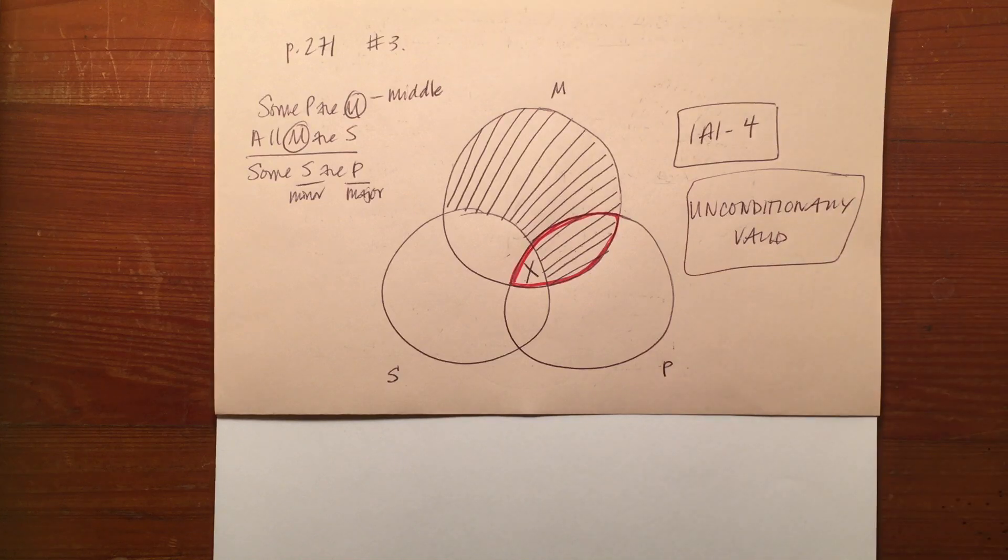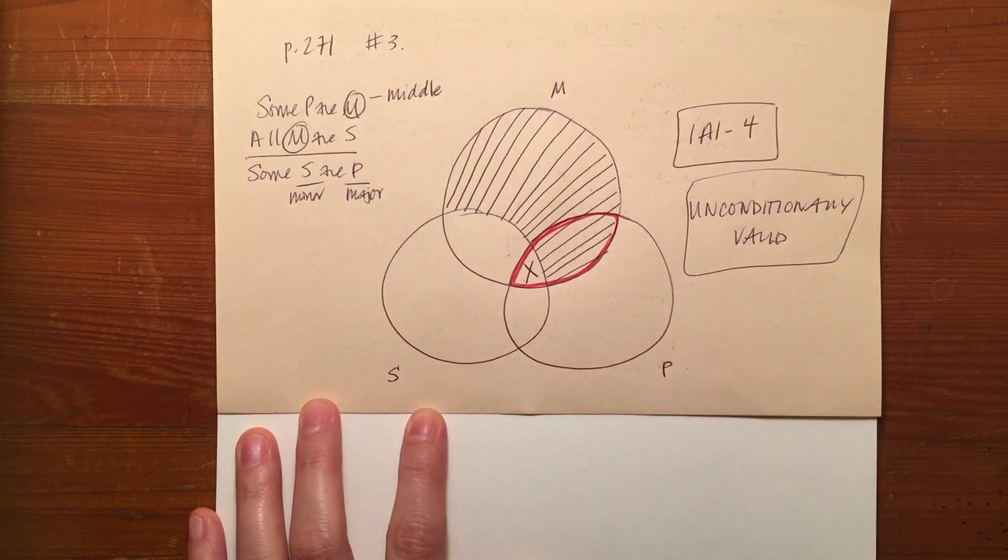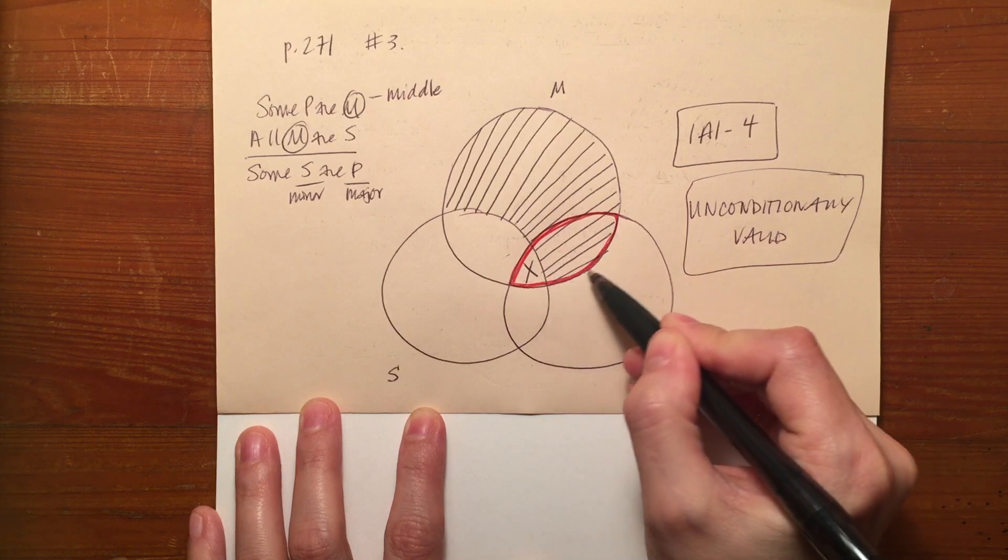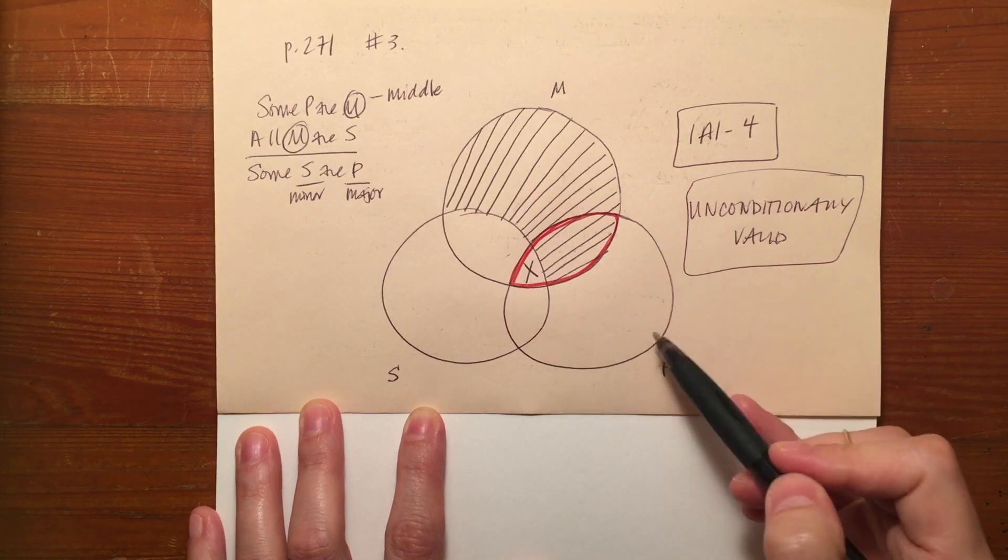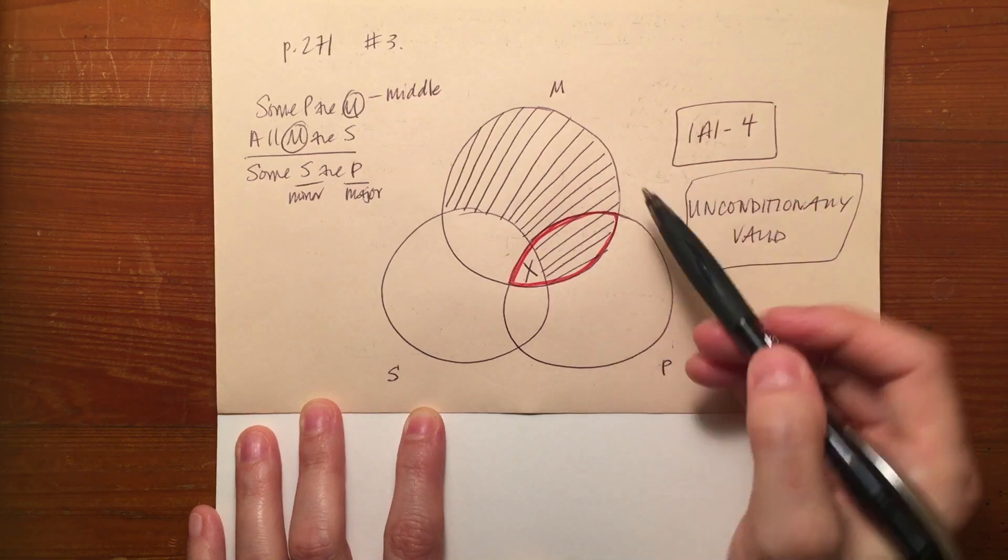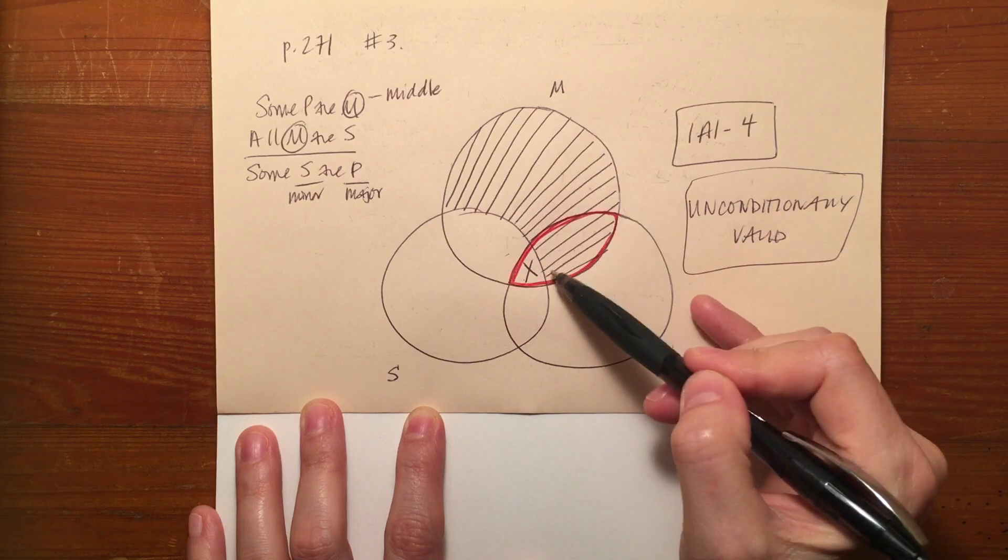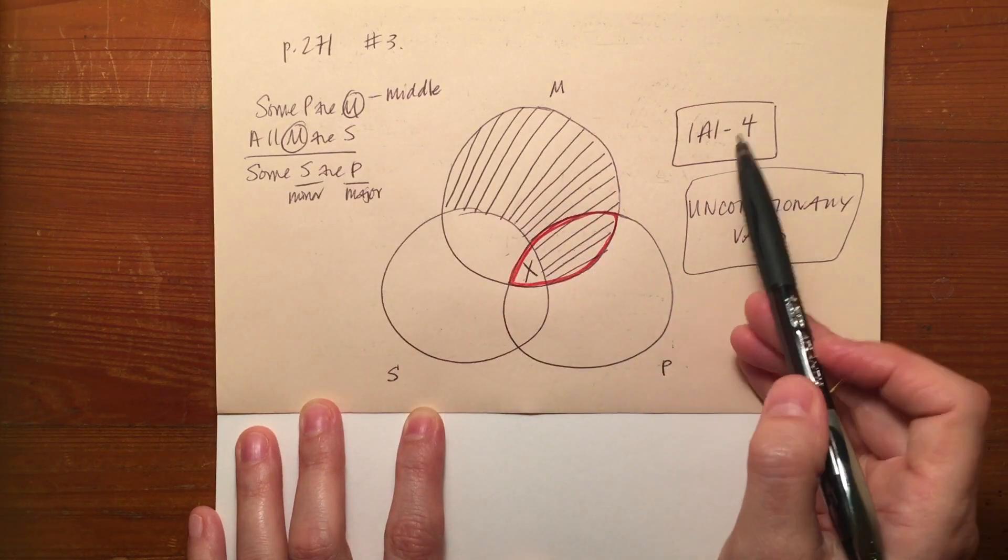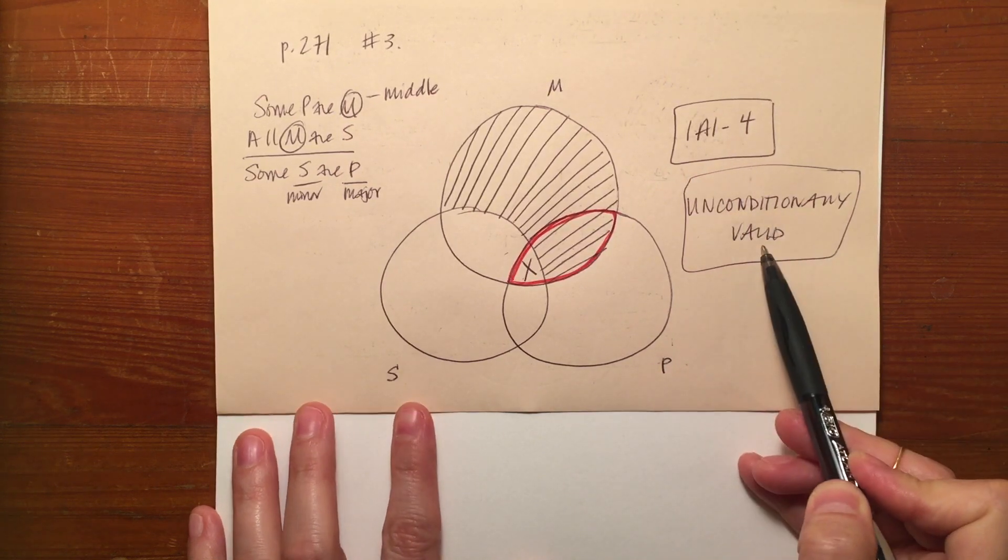You remember that we did problem number three on page 271 in the examples in your textbook that ended up with an x in the empty space where the P circle and M circle meet, because part of that circle had been shaded out by the larger part of the M circle by all M's. The mood and figure for that was IAI-4 and it was unconditionally valid.